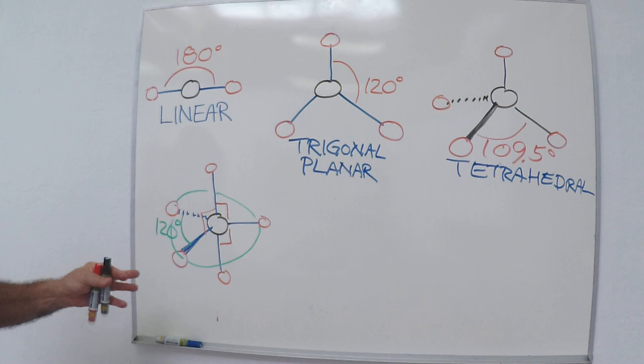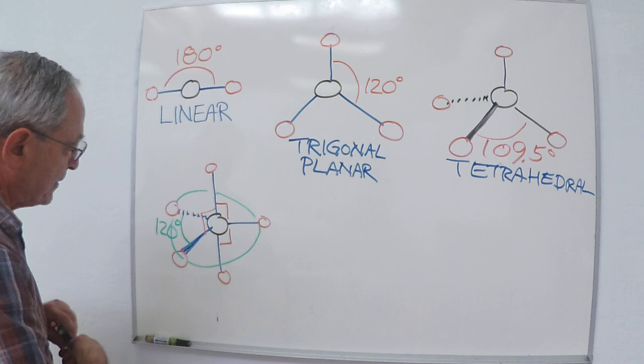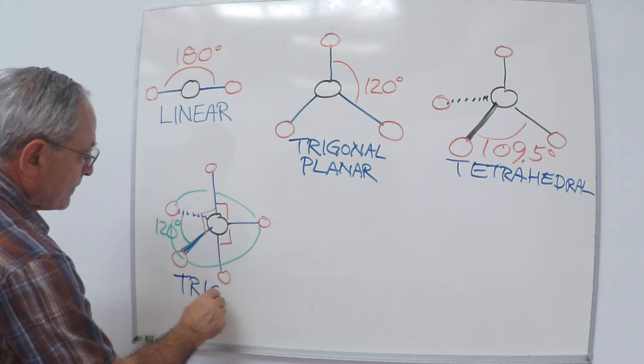Now, this is the maximum distance apart you can arrange five groups around a central atom. Now, the last geometry, so this is called, sorry, I almost forgot to name it. This is called a trigonal, because of the three sides, bipyramid. So, trigonal bipyramidal geometry. We have two three-sided pyramids.